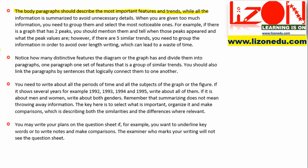All the information should be summarized to avoid unnecessary details. When you are given too much information, you need to group it and select the most noticeable features. For example, if there is a graph that has two peaks, you should mention them and tell when those peaks appeared and what the peak values are. However, if there are five similar trends, you need to group the information in order to avoid over-length writing, which can lead to a waste of time.